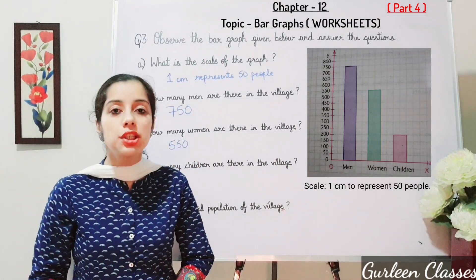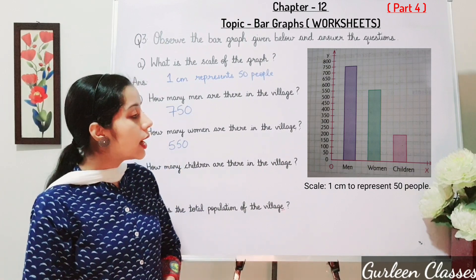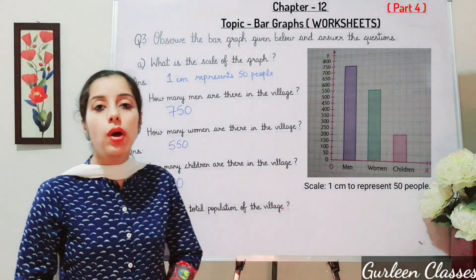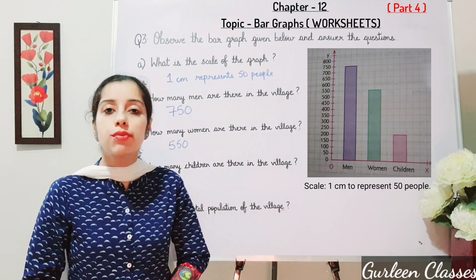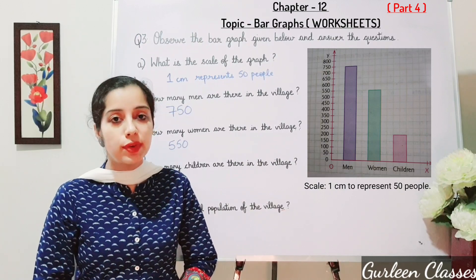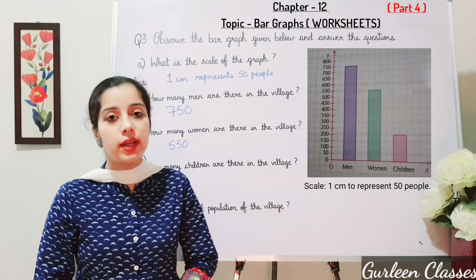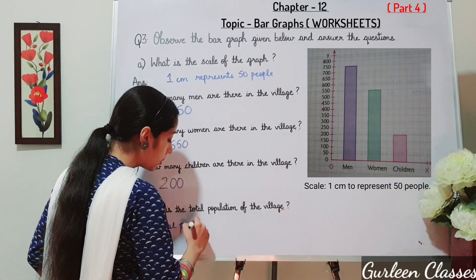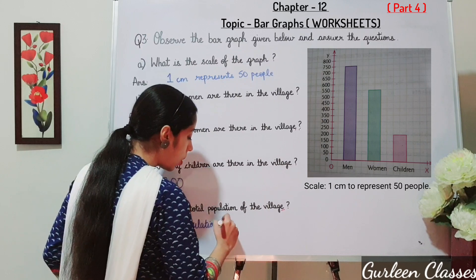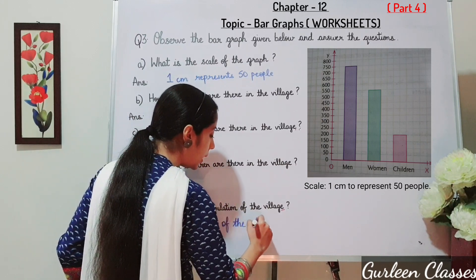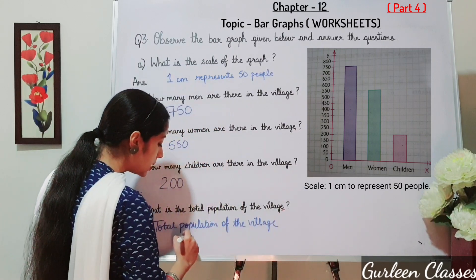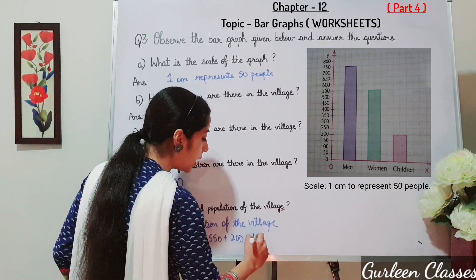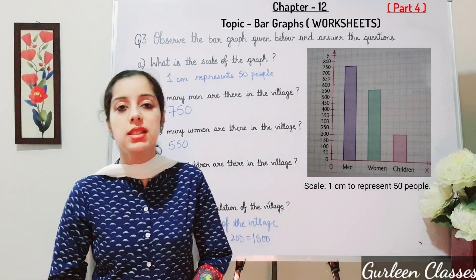How many children are there in the village? There are 200 children. Part E: what is the total population of the village? To find the total population, we add 750 plus 550 plus 200, which equals 1500. The total population of the village is 1500.